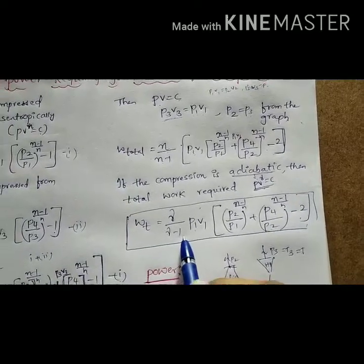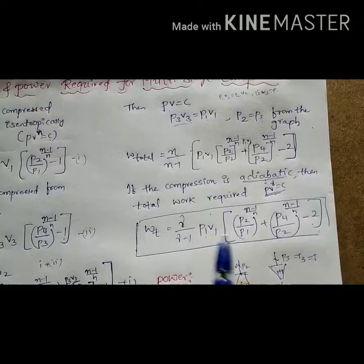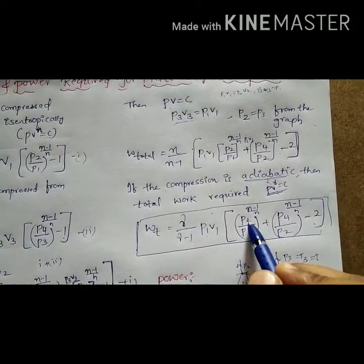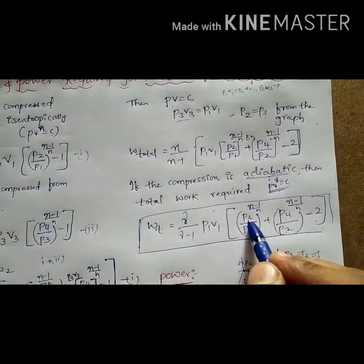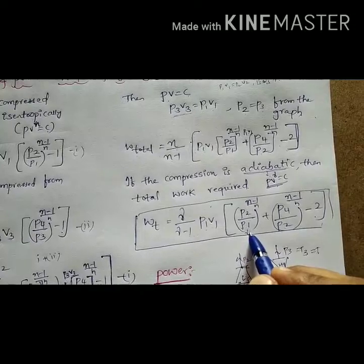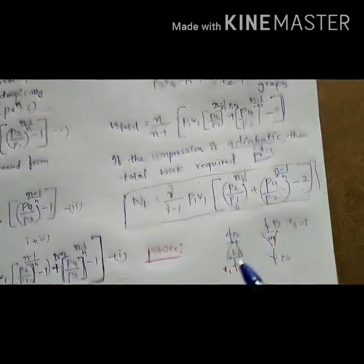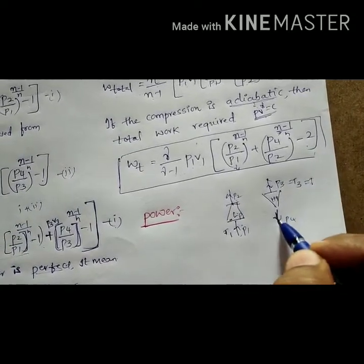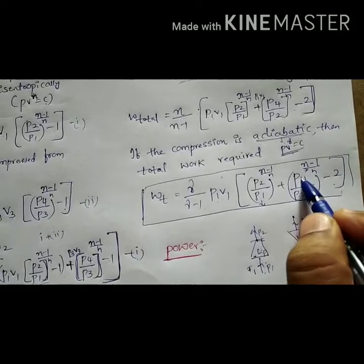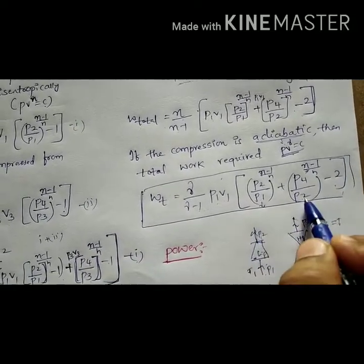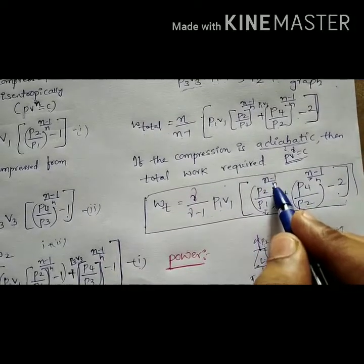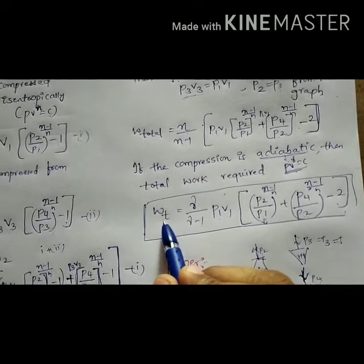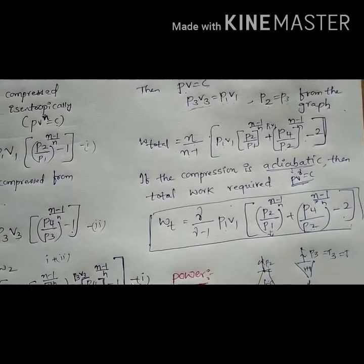To remember this formula, it is very simple. In multi-stage compression, the compression takes place first from P1 to P2, so we write P2/P1. For the next stage, the starting pressure of that stage and the final pressure P4 are used, giving P4/P2. Don't worry about the intermediate pressure P3. So the total work done is (n/(n−1)) × P1V1 × [(P2/P1)^((n−1)/n) + (P4/P2)^((n−1)/n) − 2].